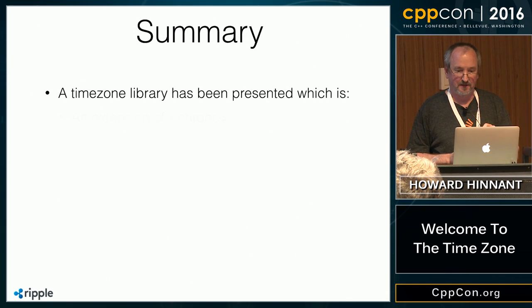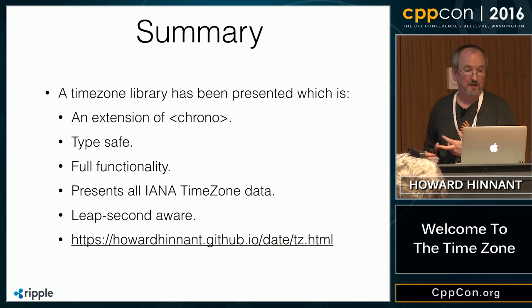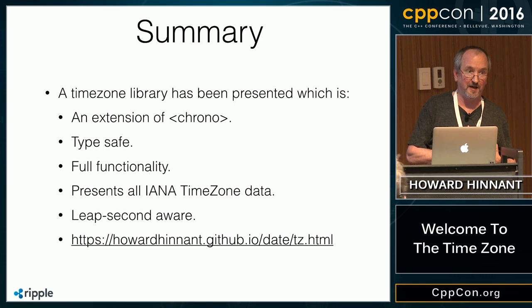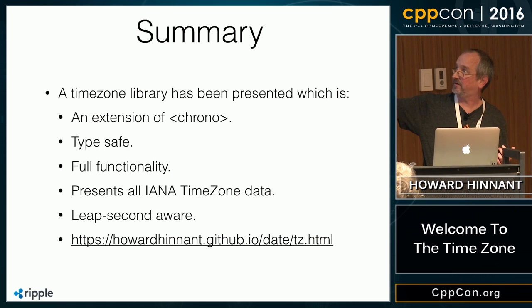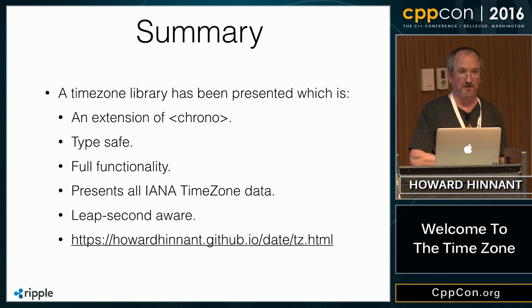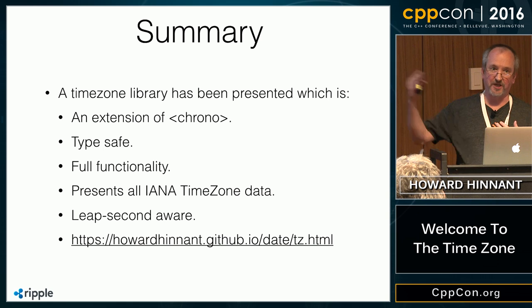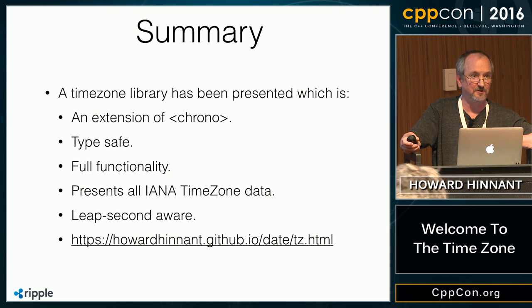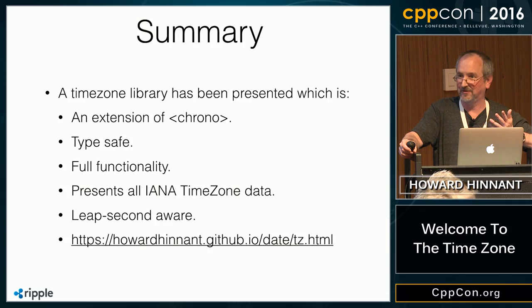In summary, a time zone library has been presented that is an extension of chrono. It's type-safe, fully functional, and presents all the data in the IANA time zone database. It's even leap second aware if you need that — you just need to convert to one of the leap-second-aware clocks. It's available at a GitHub address under the MIT open source license, with an active issues list, a Gitter room for chatting, and an active community of contributors. If you're interested, take a look, and if you have problems, email me or find me after the meeting.